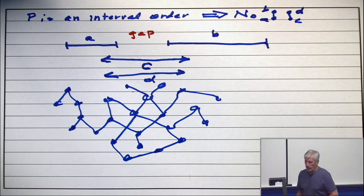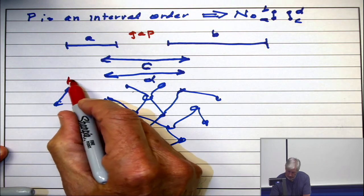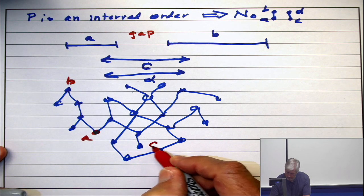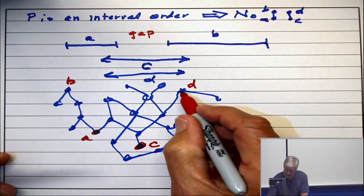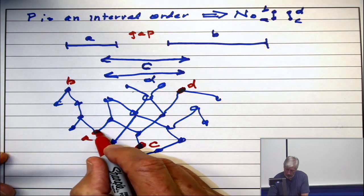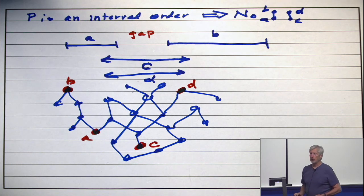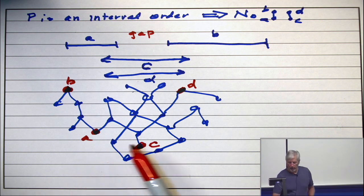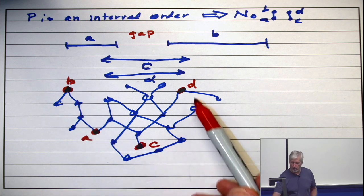Do you see them? All right, I'm going to show you my favorite. Here's A. Here's B. Here's C. And here's D. Do you see that those 4 points determine a 2 plus 2? A is less than B. C is less than D. But there's no comparabilities C to A or B. There's no comparabilities D to A or B. So that 4-element sub-poset is a 2 plus 2.